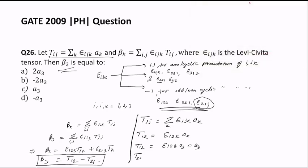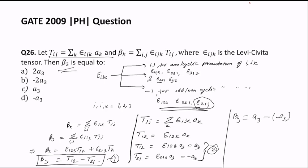Similarly, t_21 = Σ_k ε_21k a_k. Setting k=3 to get a non-zero value: ε_213 = -1, so t_21 = -a_3. Substituting back: β_3 = t_12 - t_21 = a_3 - (-a_3) = 2a_3. So the answer is 2a_3, and option A is correct. Thank you for watching this video.